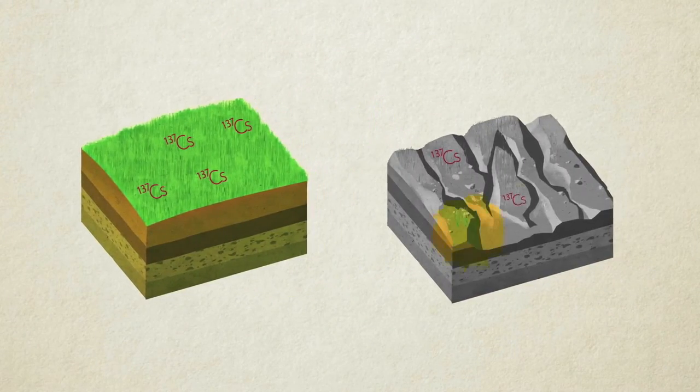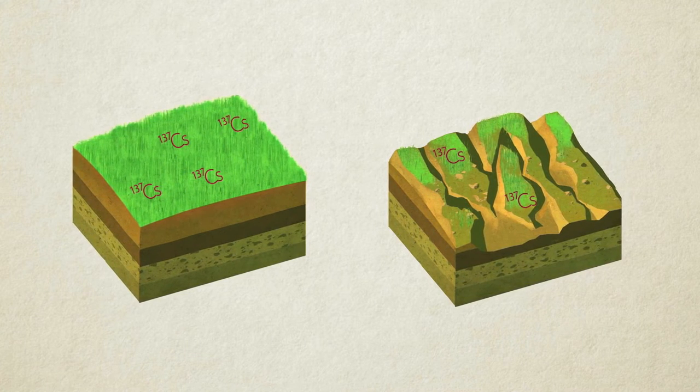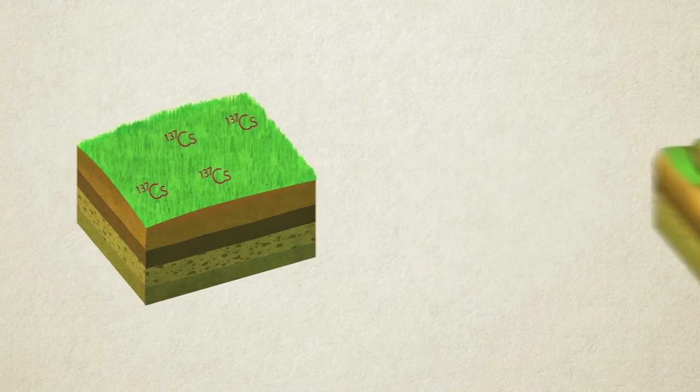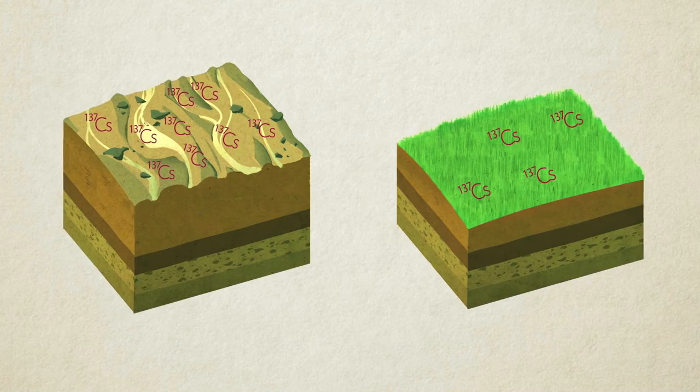If the cesium-137 content is lower than the reference site value, it means that soil has been lost to erosion, while if the content is higher than the reference site level, it indicates that soil has been deposited there.